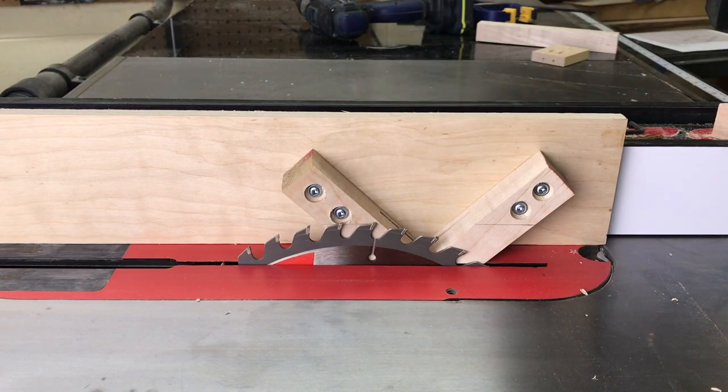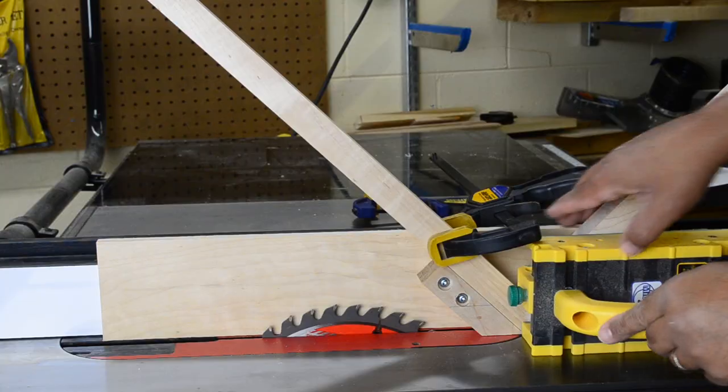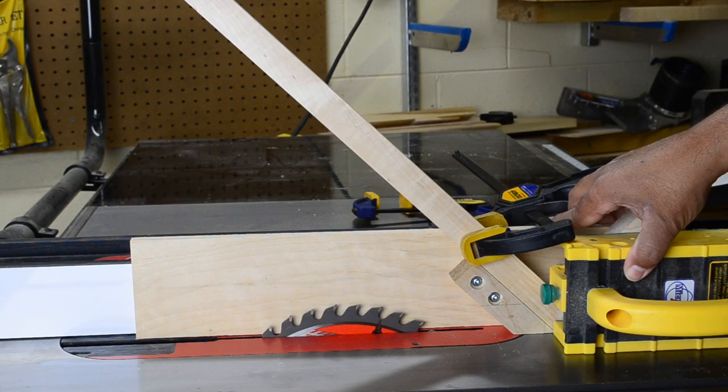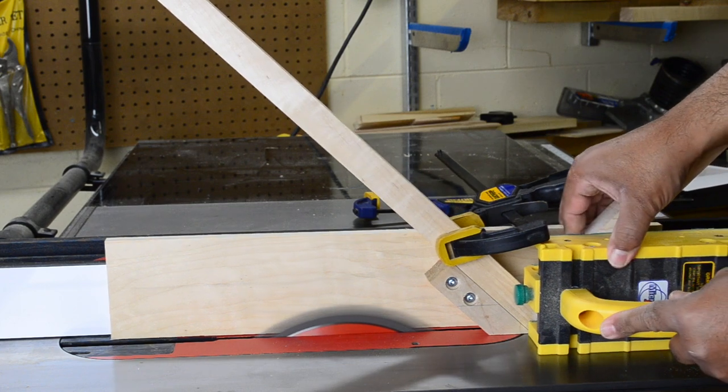To ensure no blade damage, I marked the max height of the blade on the face. The only thing left to do is clamp my project component in position, slide the fence and jig over for the desired location of the spline.